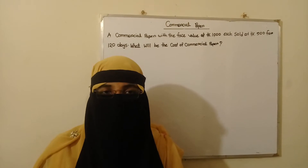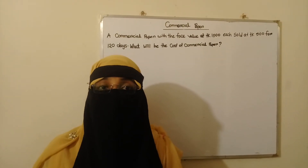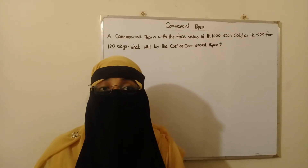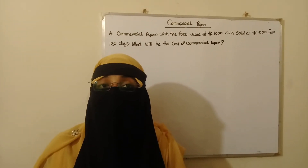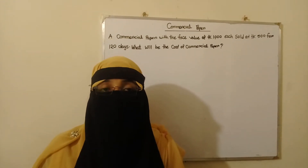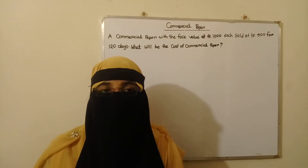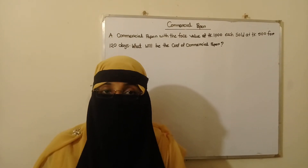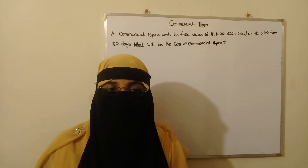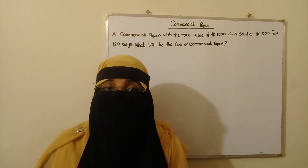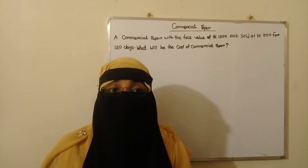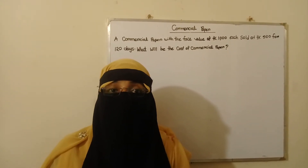Commercial paper is a type of unsecured promissory note issued by large, financially sound firms to raise or collect short-term funds. Maturities of commercial paper vary from one month to nine months, that means from 30 days to 270 days. Commercial paper is also called a discount instrument because it is sold at a price below its face or maturity value.